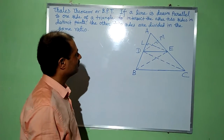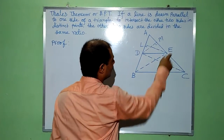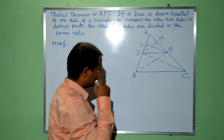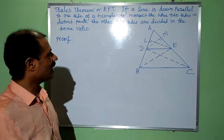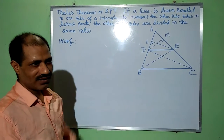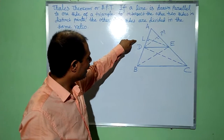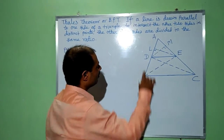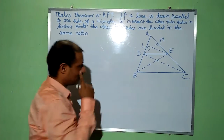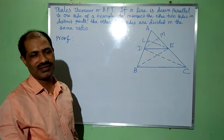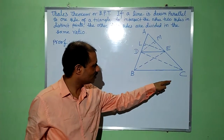Then we have to prove that AD/DB is equal to AE/EC. For this, we have to find areas. As we know, area of a triangle is half into base into height. We will take base AD, then DB, similarly base AE and base EC, to find their ratio. Also known is that DE is parallel to BC, which will be used later.